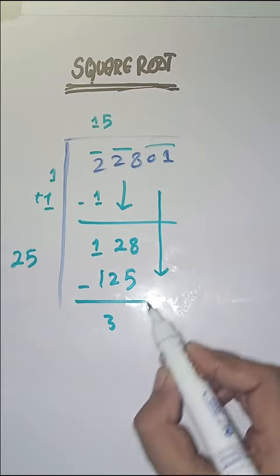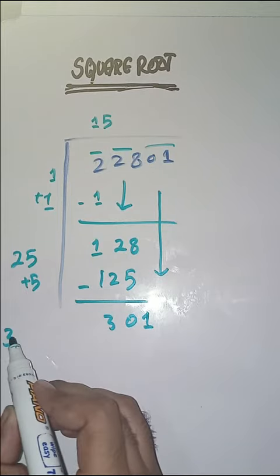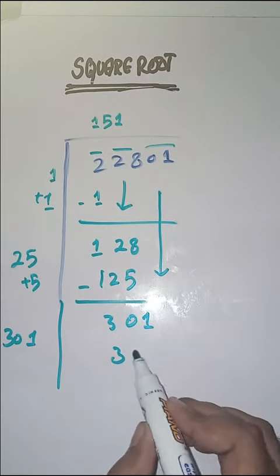Next pair we bring down 01. Here we do 25 plus 5 which is equal to 30. Now we will take a number 1. 301 times 1 is 301.